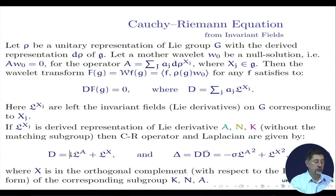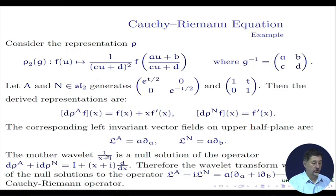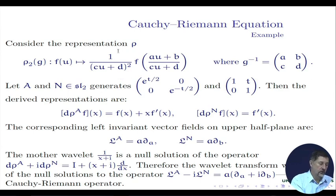This is what follows from our formula. In particular, that gives us a connection with the Cauchy-Riemann and Laplace operators in complex analysis. So if we are able to choose a mother wavelet such that it is annihilated by some vector in the corresponding derivative representation, then the entire wavelet transform will disappear. Let us come back to our representation.